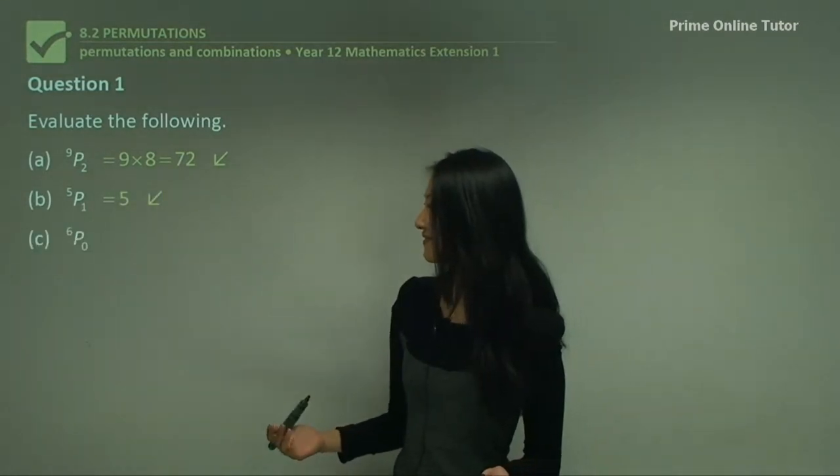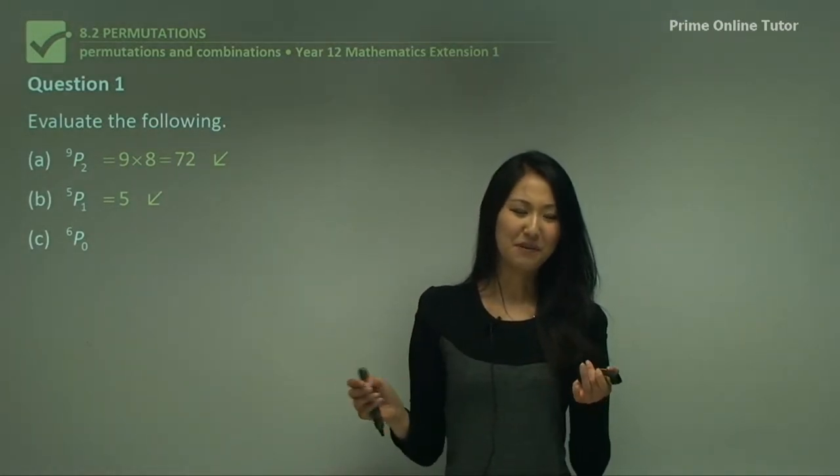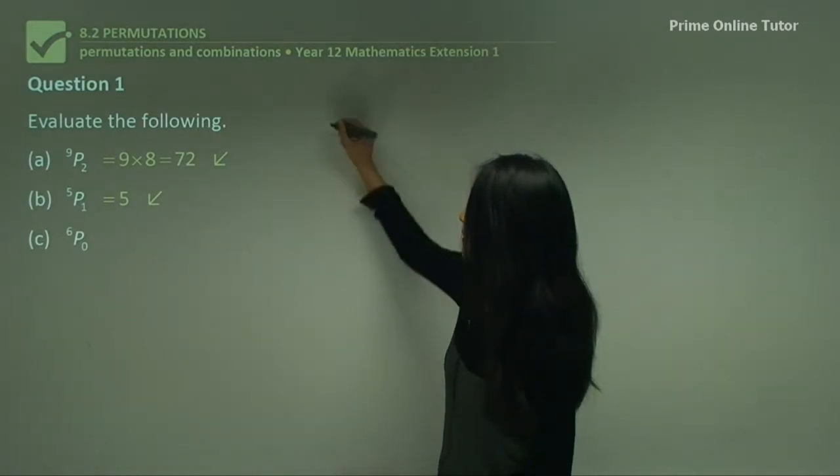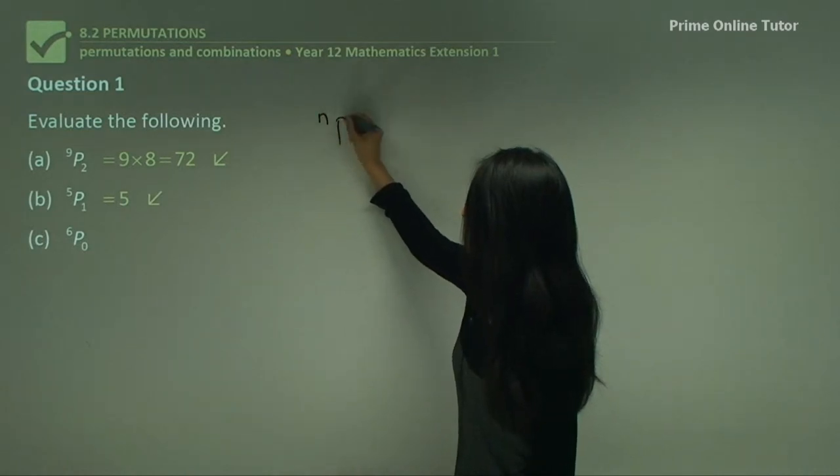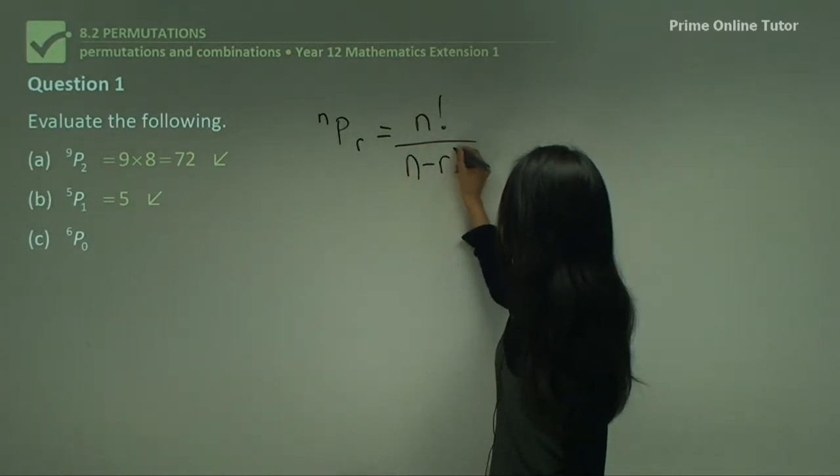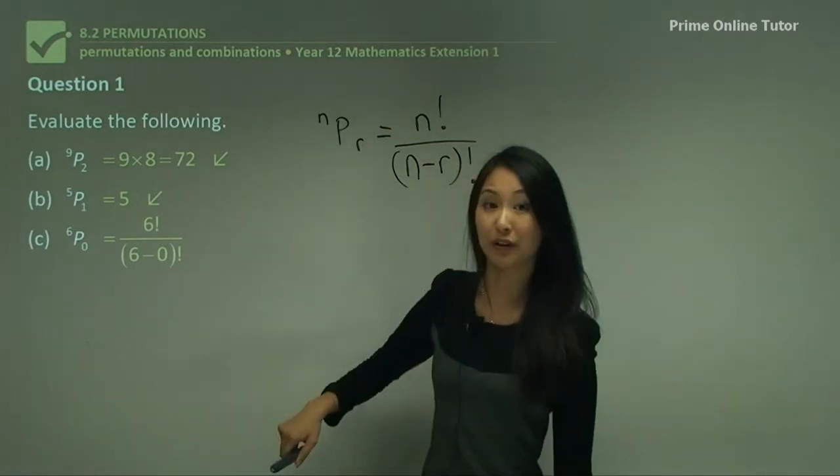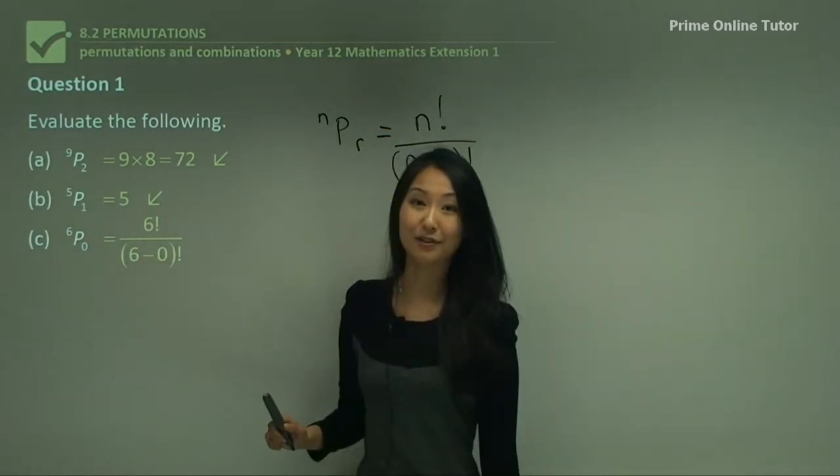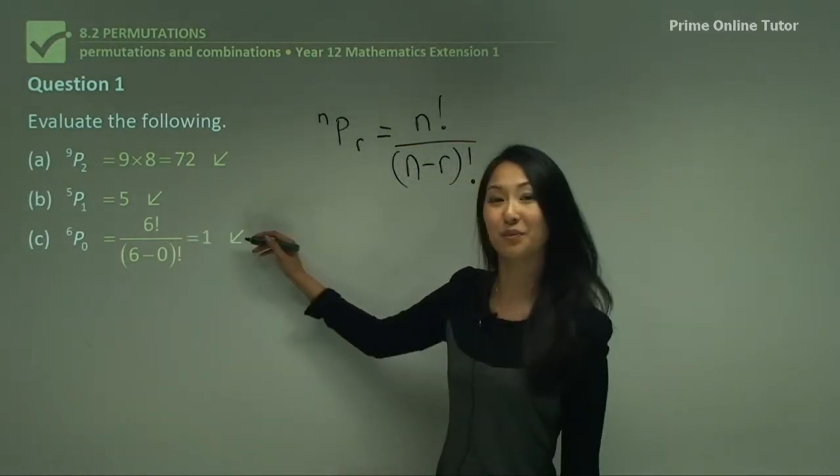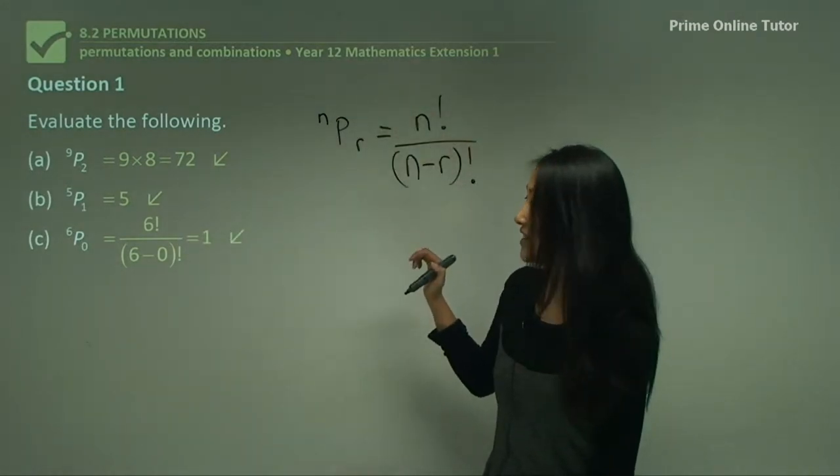What about ⁶P₀? This is a bit confusing because it's 6 factorial, but what's your zero number? We consider the other equation: ⁿPᵣ = n!/(n-r)!. Then we have 6!/(6-0)!, which is the same as 6!/6!, which equals 1. Can you see how that equals 1? So for some of these, you're going to have to use the other equation to work it out.